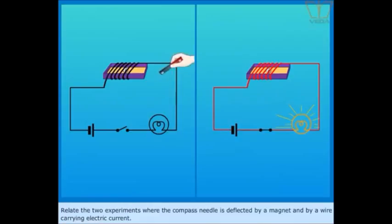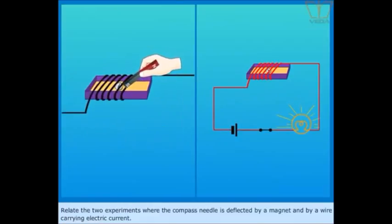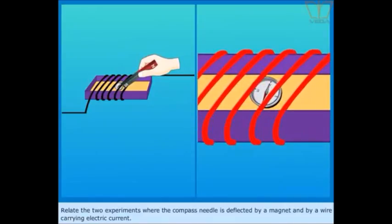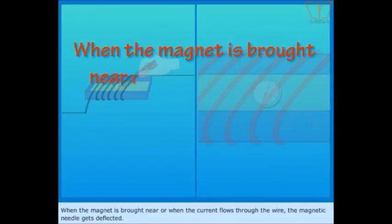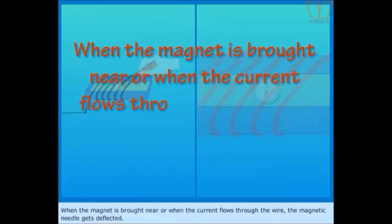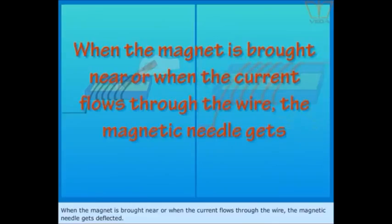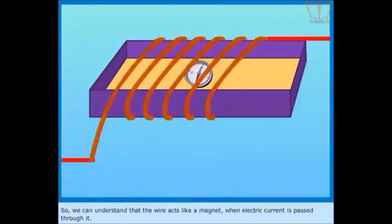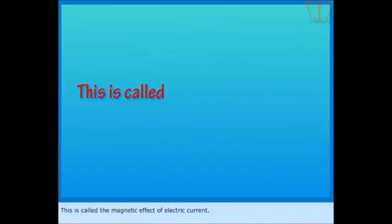Relate the two experiments where the compass needle is deflected by a magnet and by a wire carrying electric current. When the magnet is brought near or when the current flows through the wire, the magnetic needle gets deflected. So, we can understand that the wire acts like a magnet when electric current is passed through it. This is called the magnetic effect of electric current.